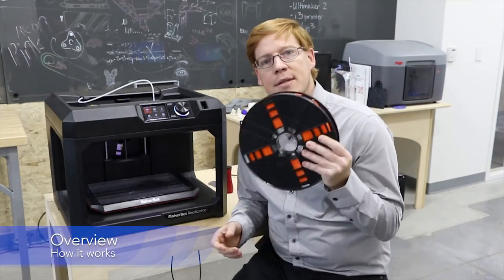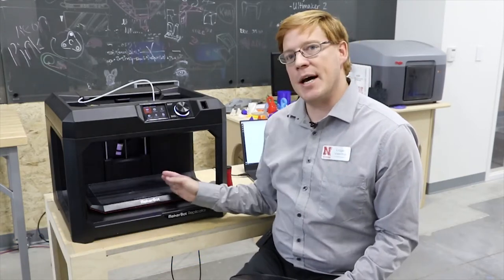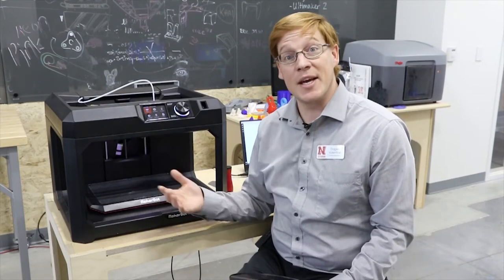The way the 3D printer works uses plastic from a spool and it goes through the extruder and the software prints it out and moves the extruder around to get it onto the build plate to make a three-dimensional object.